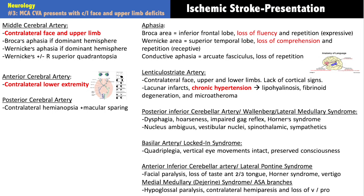Medial medullary syndrome involves the anterior spinal artery branches. The key finding is hypoglossal paralysis — cranial nerve twelve is midline in the medulla, so if you see that, the localization is done. Additional findings include contralateral hemiparesis and loss of vibration and proprioception. You don't need all the other findings if you see hypoglossal paralysis — game over, it's the medial medulla and anterior spinal artery.